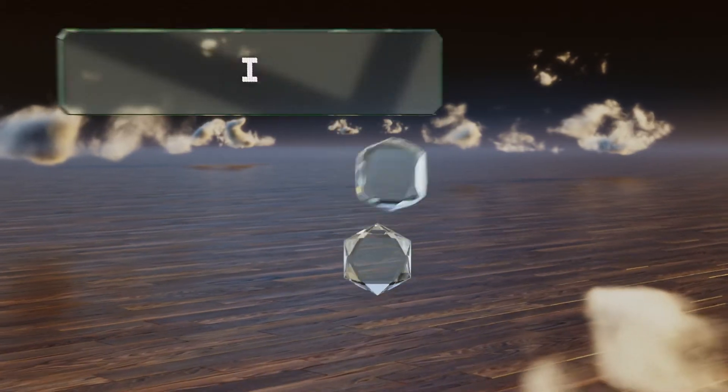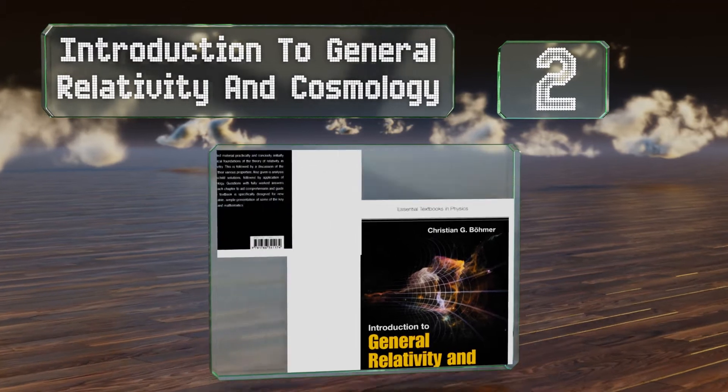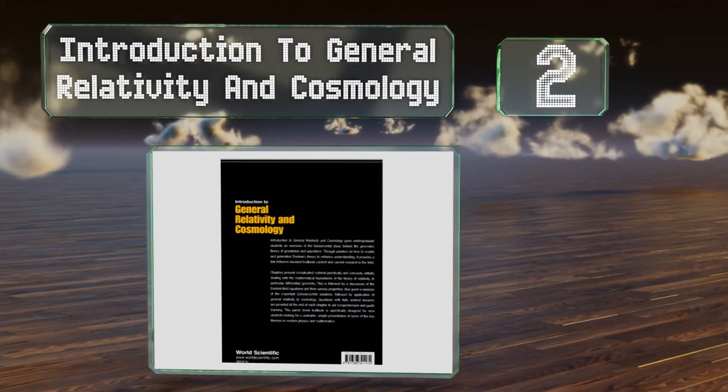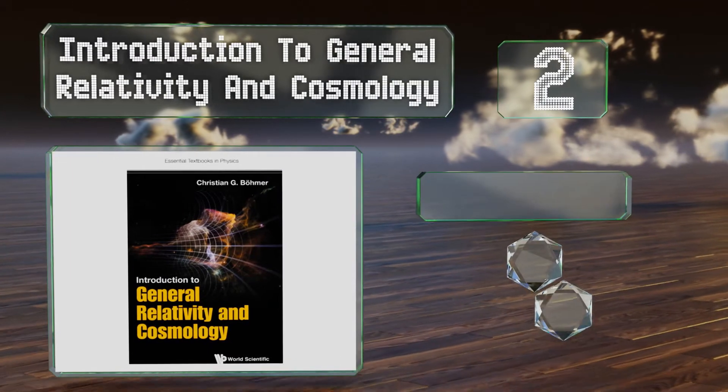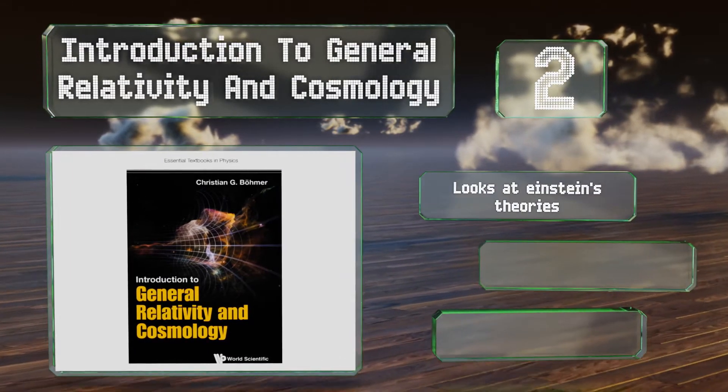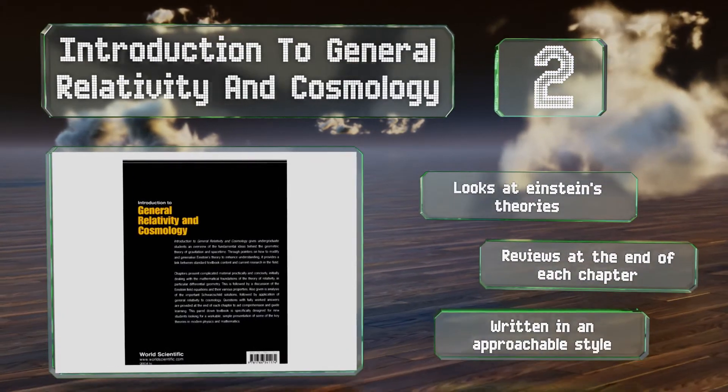At number 2, Introduction to General Relativity and Cosmology by Christian G. Bomer places an emphasis on the physical realities of the universe and space-time. It looks at Einstein's theories and there are reviews at the end of each chapter. It's written in an approachable style.